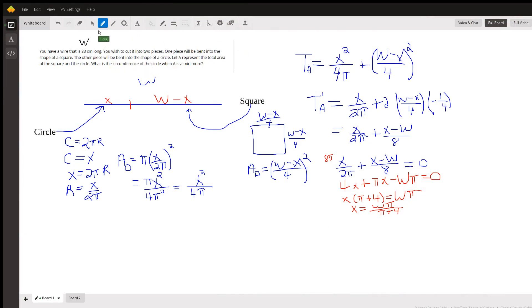Okay, let's generalize this problem a little bit. Instead of saying the wire is 83 centimeters long, let's let it be W, some number greater than zero. So that's the length of the wire.